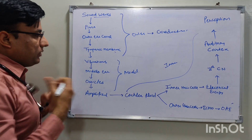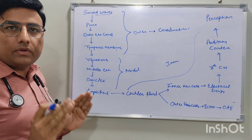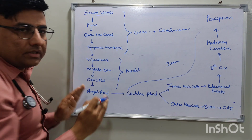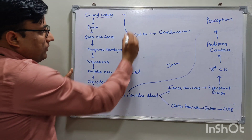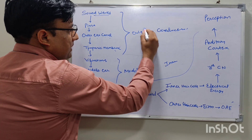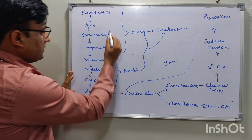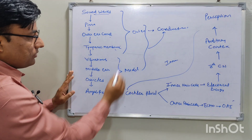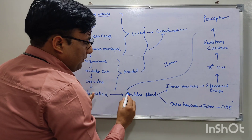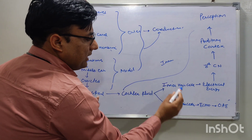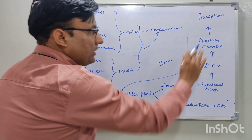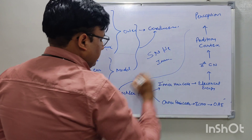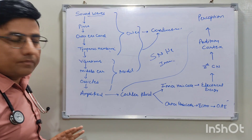If any problem happens in this full cycle, the location of pathology determines which type of hearing loss will occur. If the problem is in the outer ear or middle ear, it affects conduction of sound waves, causing conductive hearing loss. If the problem is in the inner ear — cochlea, inner hair cells, outer hair cells, eighth cranial nerve, or up to the auditory cortex — that causes sensorineural hearing loss.